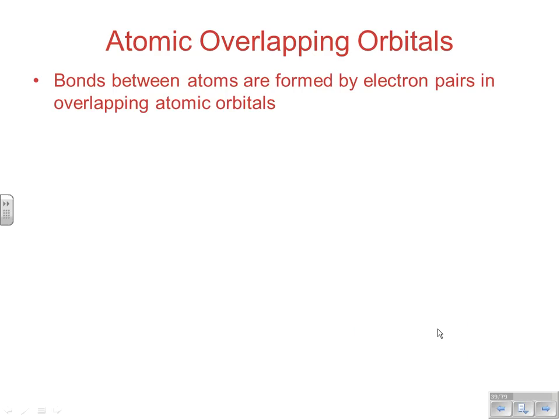For today's notes we'll be looking at section 9.5, dealing with the concepts of hybridization. Recall that we were talking about atomic overlapping orbitals — when s's and p's from two different atoms come together, the orbitals can overlap and the old atomic orbitals become new molecular orbitals. Yesterday we were looking at how s's and p's can do that to form sigma and pi bonds.